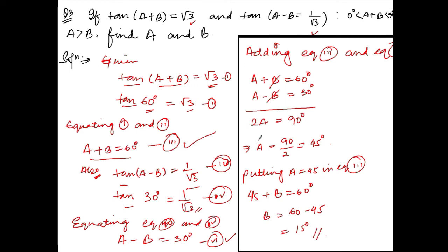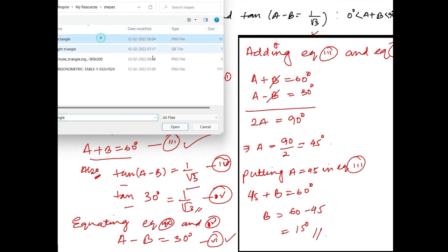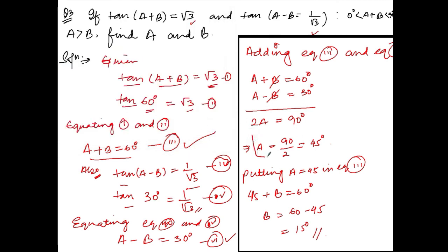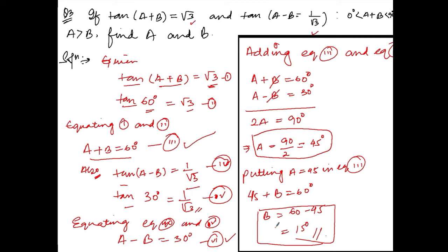Therefore, a = 45° and b = 15°. Thank you so much. If you have any doubts, please write down in the comments below. Please memorize the trigonometric table — values like sin 30°, sin 45°, and so on — it will be very helpful in the next exercise. We will meet in the next video.